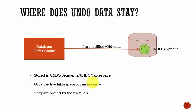The next question is: where does this Undo data stay? The Undo data is stored in Undo segments, which are part of the Undo tablespace. All the pre-modified data — or old data — is copied from the database buffer cache into the Undo segment. These Undo segments are part of the Undo tablespace. An important point to remember: an Oracle instance can have only one active Undo tablespace, and this Undo tablespace is owned by the user SYS.